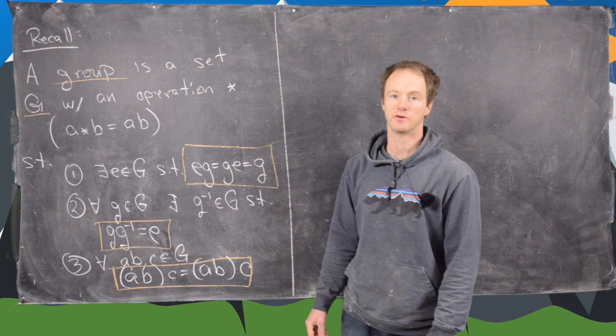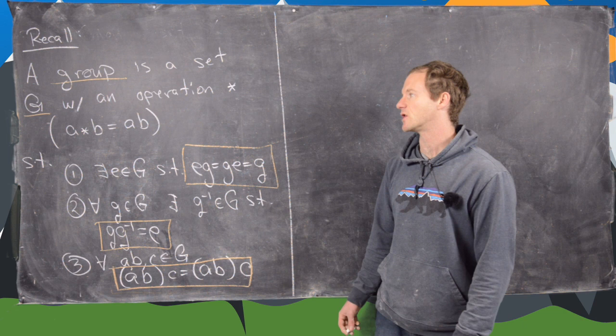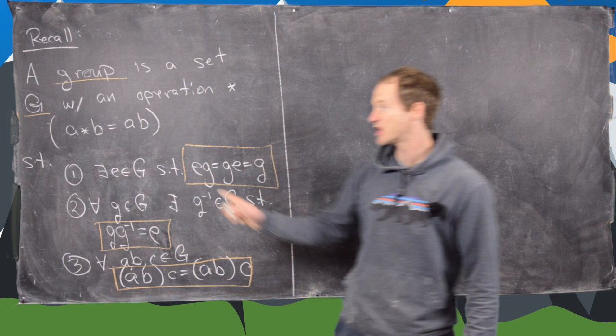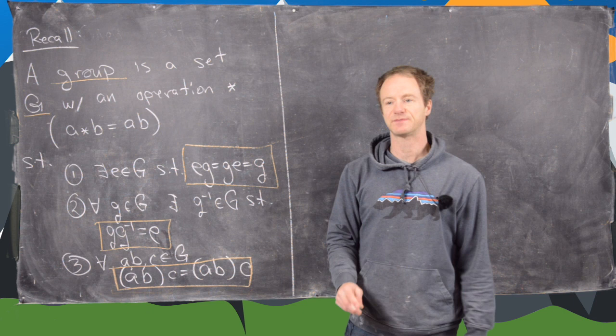And so just as a reminder what a group is, it's a set G together with an operation star and in general we write A star B just as AB. Now if you're dealing with a specific group, you might write that operation in there, be it multiplication or addition.